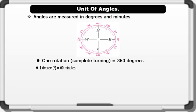We have 60 minutes in 1 degree, and 60 seconds makes 1 minute.